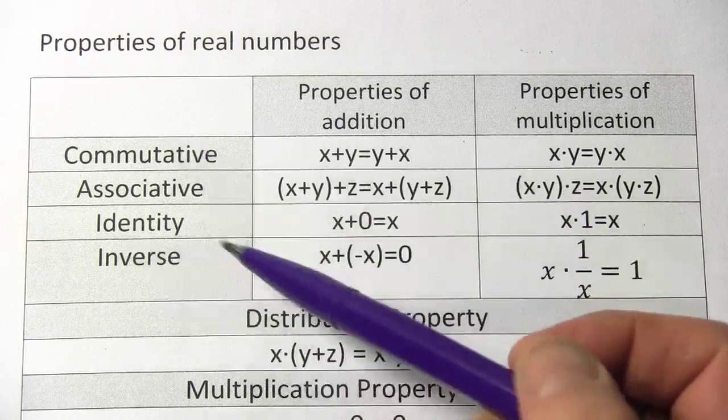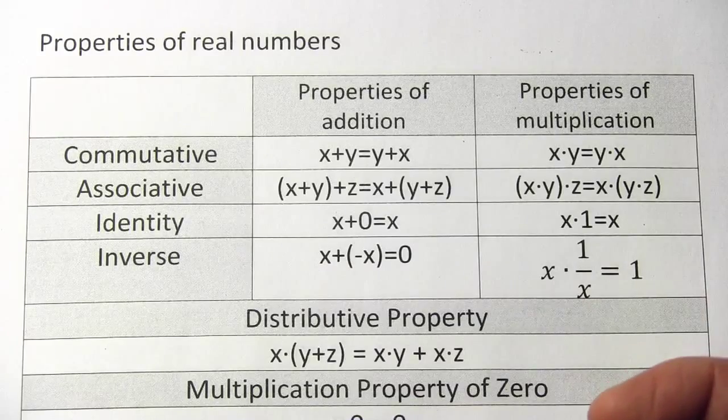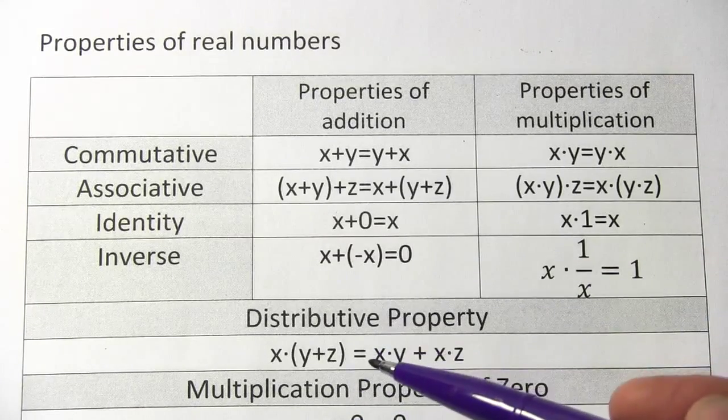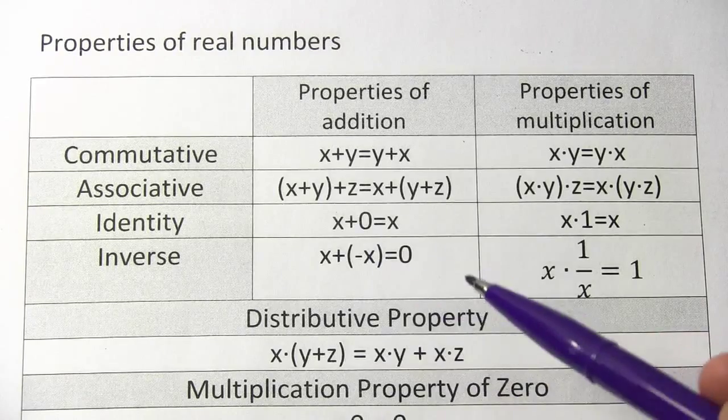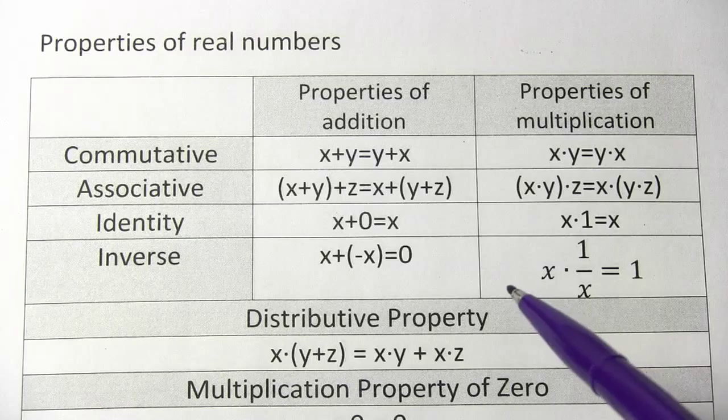You've probably come across some of these before, words like commutative, associative, identity. Probably ring a bell, although if this kind of stuff is confusing to you and gives you a headache, I think the best way to approach having to do problems like this is to have this chart handy or something like it.